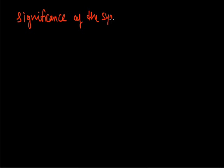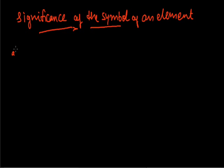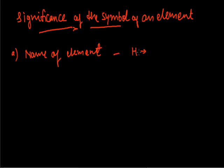The significance of the symbol of an element: so far we have studied about symbols given by Berzelius. The significant roles of symbols are as follows. First, a symbol represents the name of the element. For example, if you write H, then you know it is the symbol for hydrogen. Similarly, writing Cu tells you it is copper.